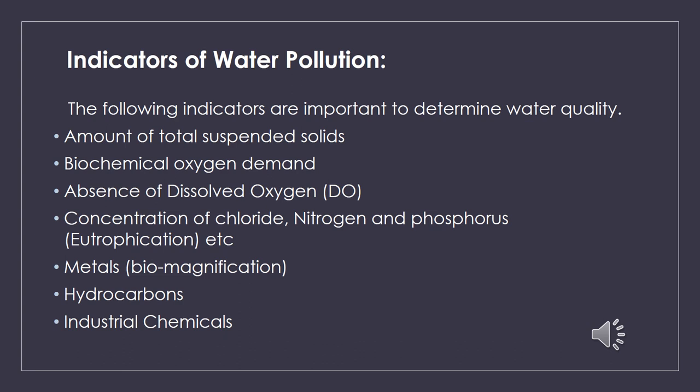The concentration of chloride, nitrogen, and phosphorus is also an indicator. Domestic wastewater, agricultural drainage water, and industrial effluents contain phosphorus and nitrogen. This is a source of additional nutrients for aquatic organisms and causes severe eutrophication of lakes, rivers, and coastal water. Eutrophication is a process by which an entire body of water becomes progressively enriched with minerals and nutrients, particularly nitrogen and phosphorus, which results in health hazards.